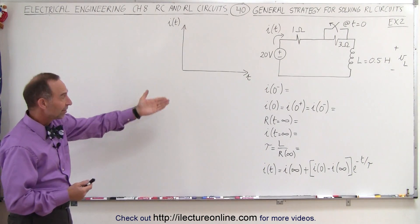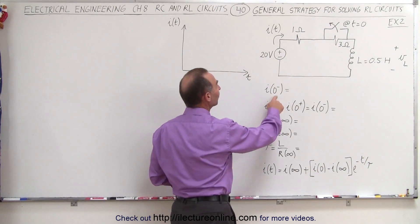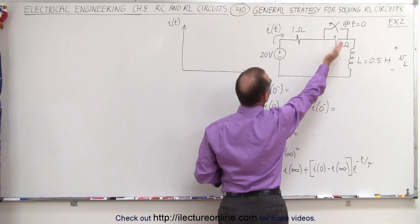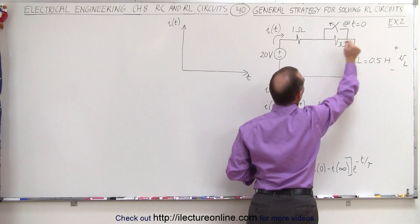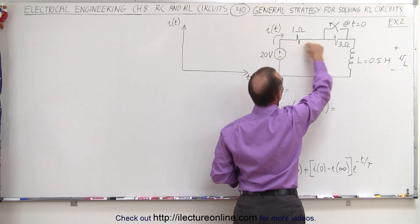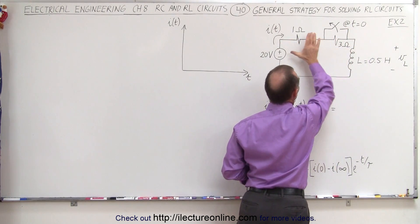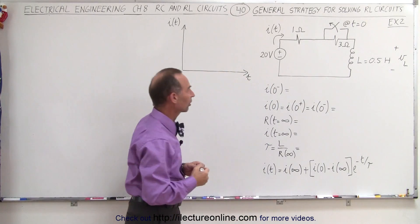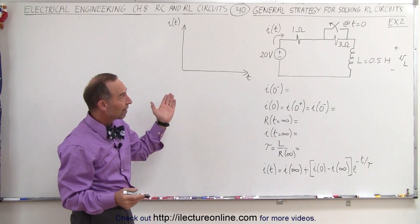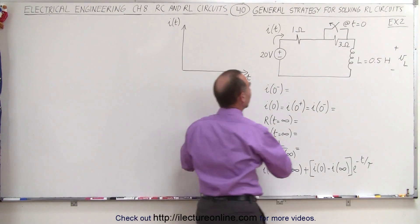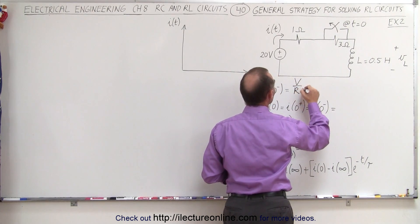We need to find the current right before the switch opens. Notice before the switch opens, the current flows through both resistors. When the switch opens, the current will bypass the second resistor, so there will only be the one resistor in the circuit. So before the switch opens, you have both resistors in the circuit, and then you end up with V over R.